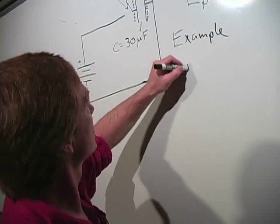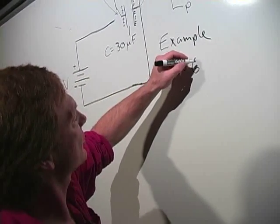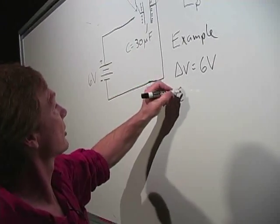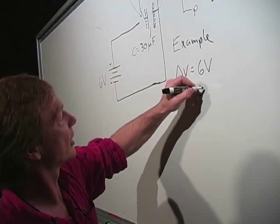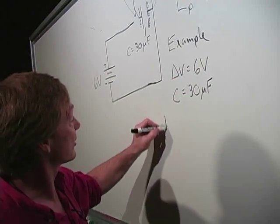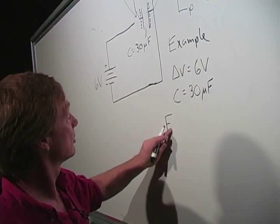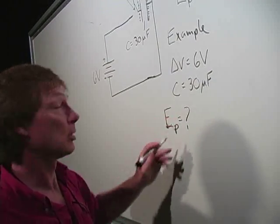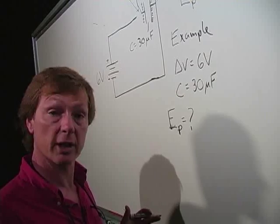So I've got a voltage of 6 volts. I love ohms, apparently. And a capacitance of 30 microfarads. And I'm going to charge up that capacitor, and I want to know when I do that with that 6-volt battery, what's the potential energy? How much energy can I store?